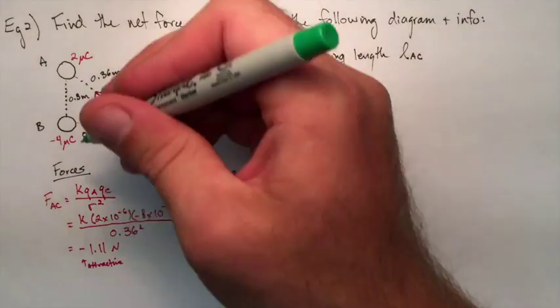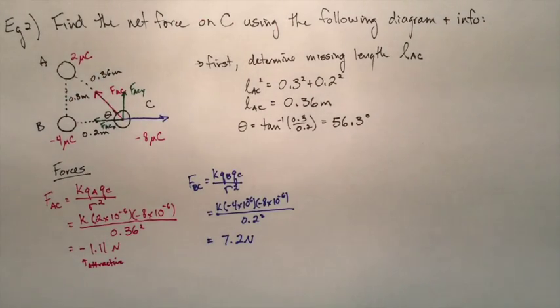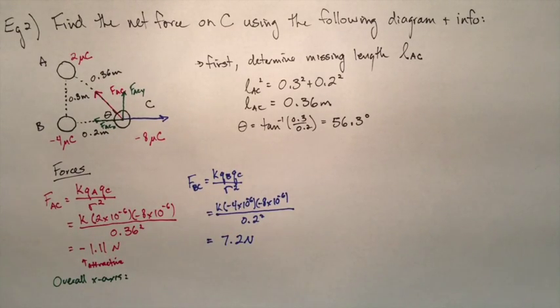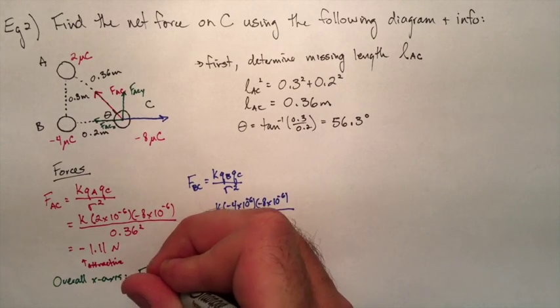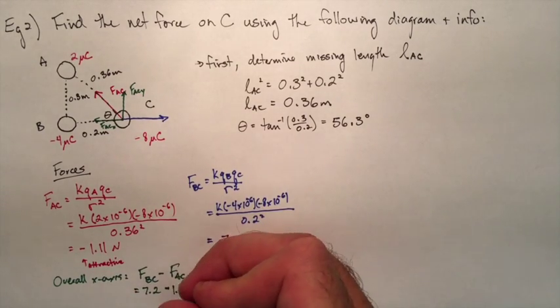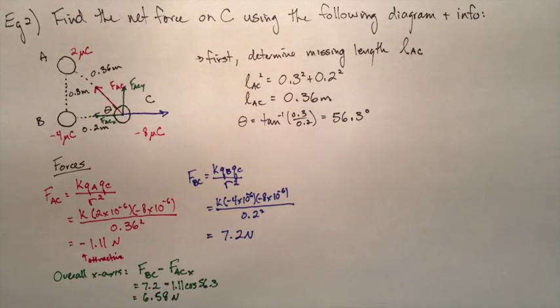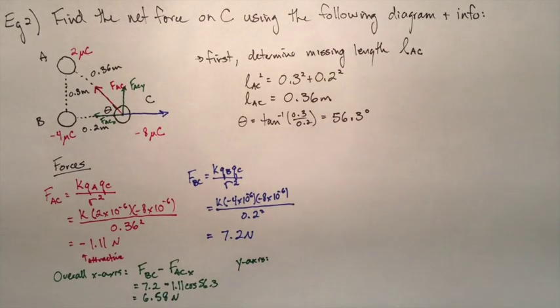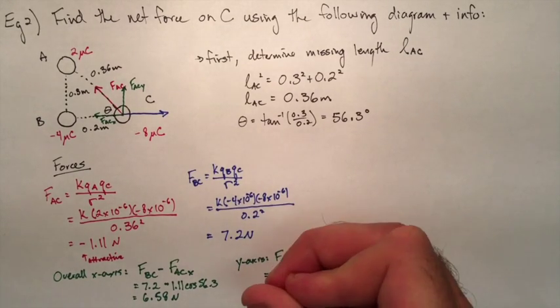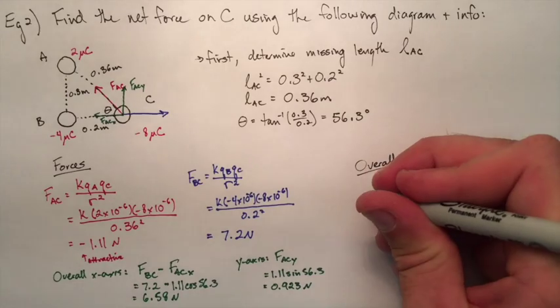So now we have that red and blue vector, all we have to do is add them up. So we'll do that using components. We need to break the red vector up into two components, one along the Y and one along the X. So we need to find the overall force on the X-axis and the overall force on the Y-axis and add them up. So here's the X-axis, we're going to take that force between B and C and we're going to subtract the X component of AC. So that's 7.2 subtract 1.11 cos 56.3, which ends up being 6.58. Now looking along the Y-axis, the only force there is going to be the Y component of the force between A and C. So it's 1.11 sin 56.3, which ends up being 0.923.